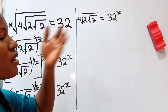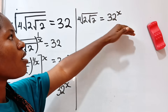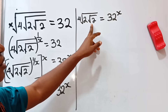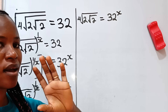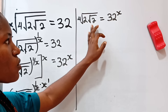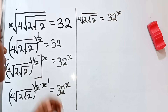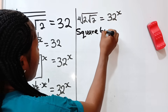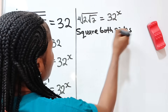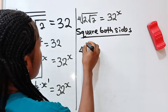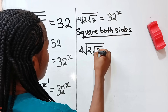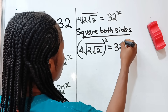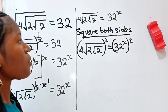Now our intention is to get the value of x, and we need to remove these roots. To remove these square roots, we need to square both sides. So when we square both sides, we have 4 root 2, root 2 raised to the power of 2, is equal to 32 to the power of x raised to the power of 2.